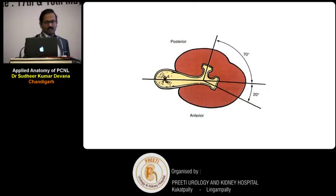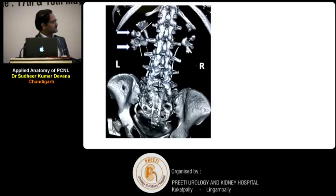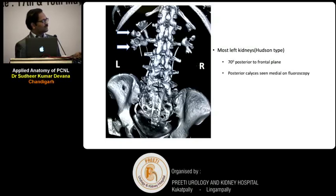This is the Brödel-type system, which is generally seen in right kidneys. The other system is exactly opposite: in that system the angulation is more medial on fluoroscopy, so the anterior calyx appears more lateral. In a live example, on the left kidney the posterior calyxes are aligned 70 degrees to the frontal plane and are seen medially on fluoroscopy. On the right-side kidney, the posterior calyxes are only 20 degrees aligned, so they appear more lateral — while on the left they appear more medial.